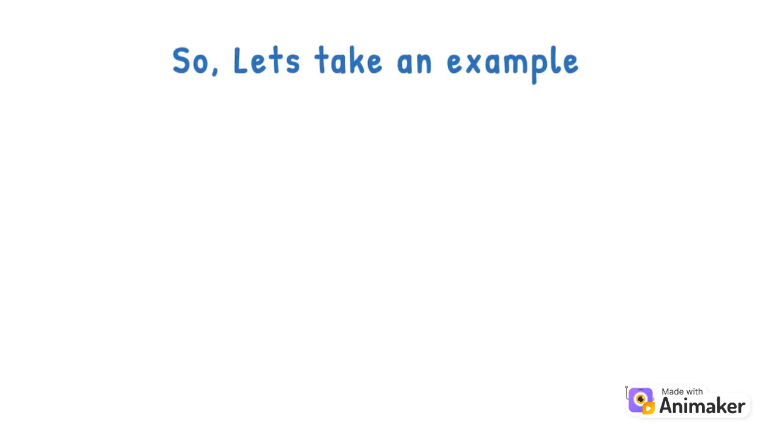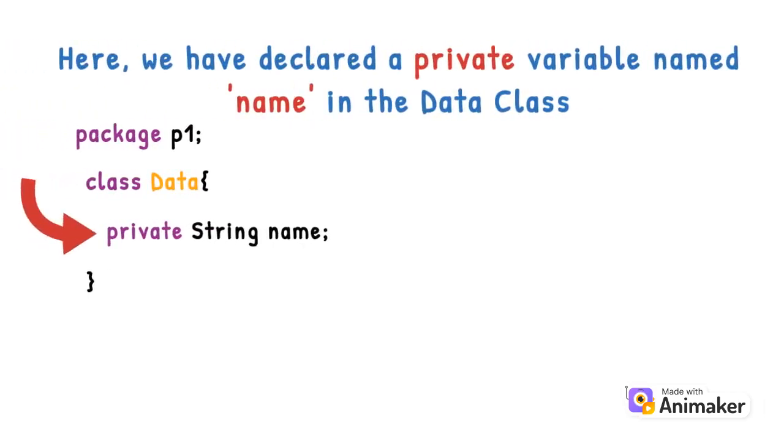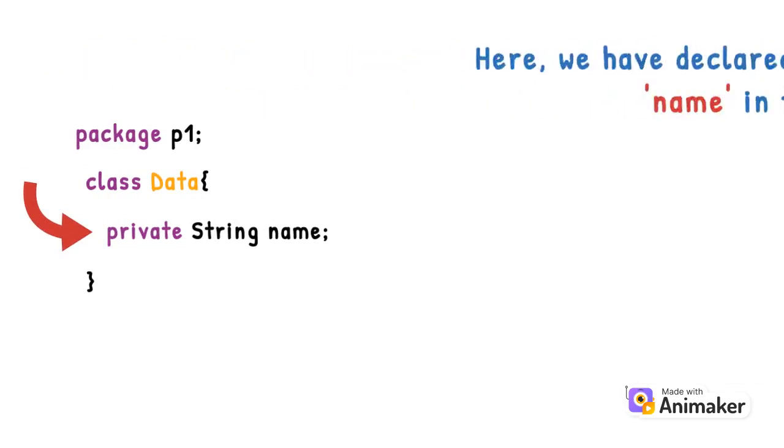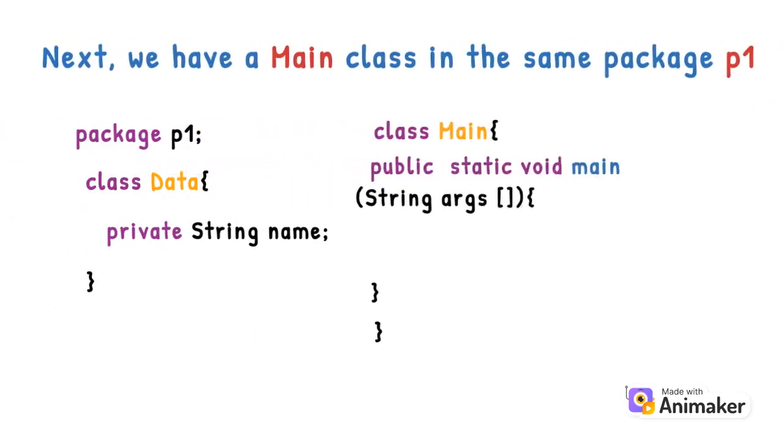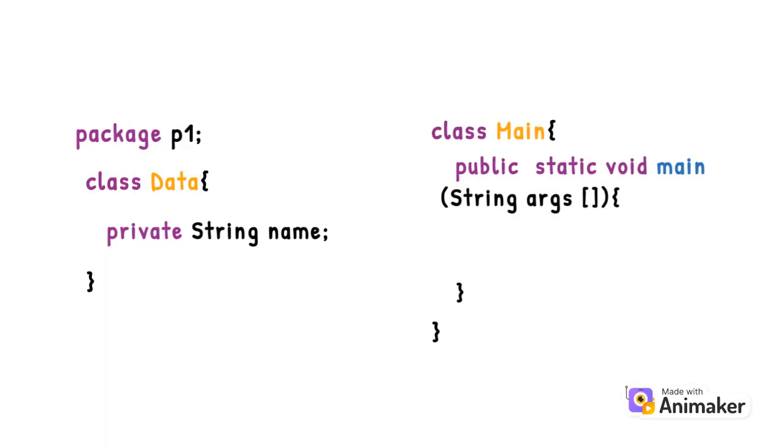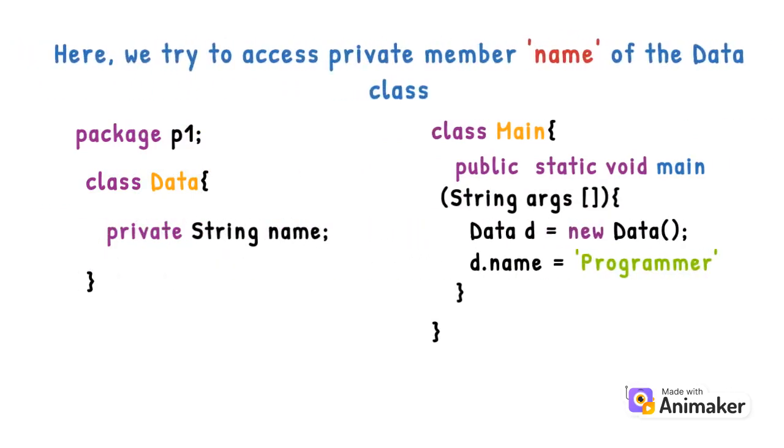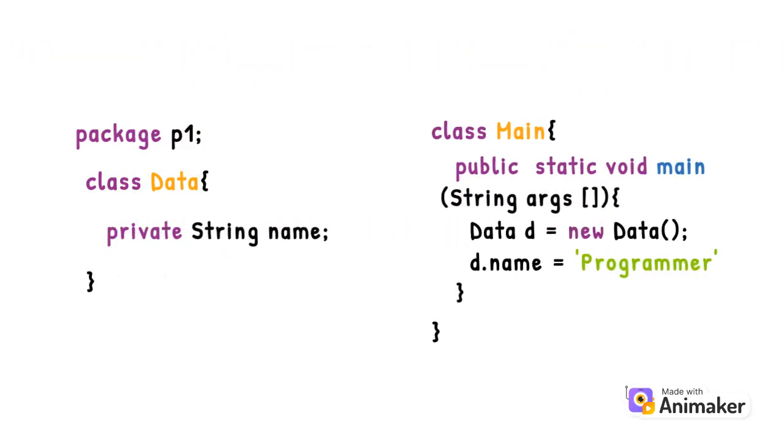Let's take an example of the data class in package P1. Here, we have declared a private variable named name in the data class. Next we have a main class in the same package P1. Here, we try to access the private member name of data class. When we run the program, we will get the following error.